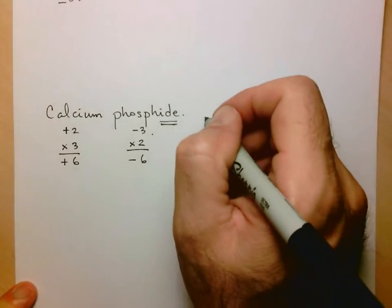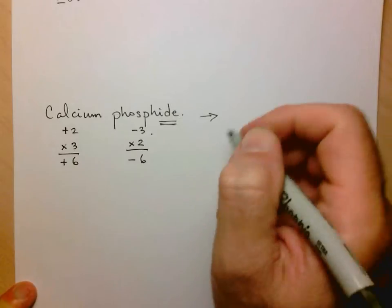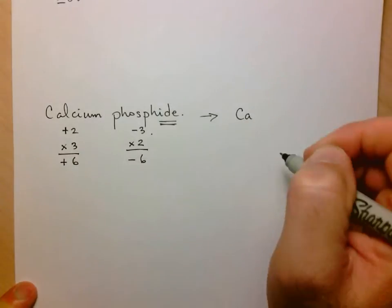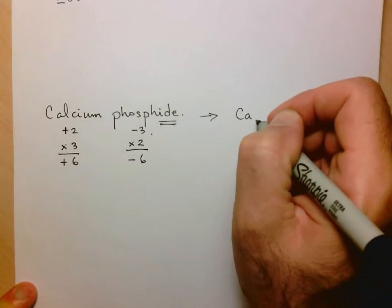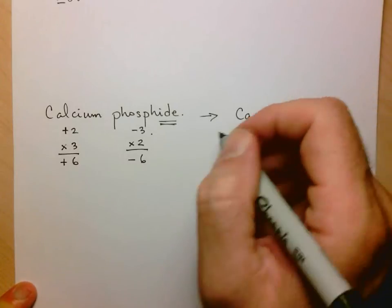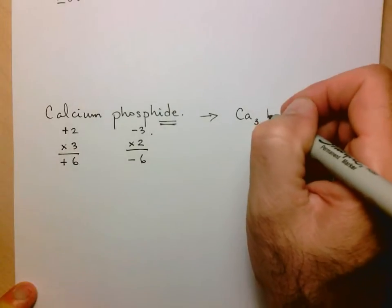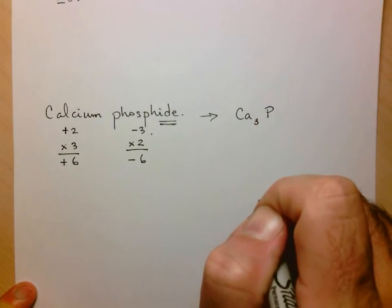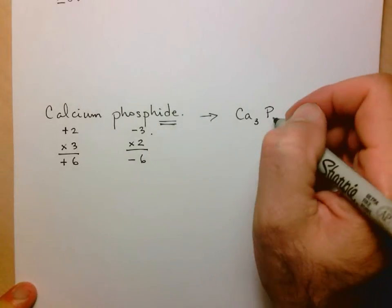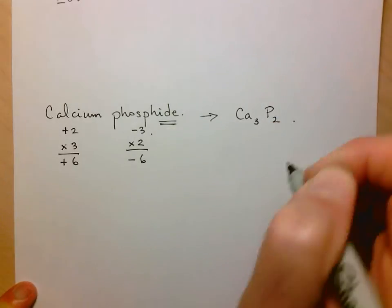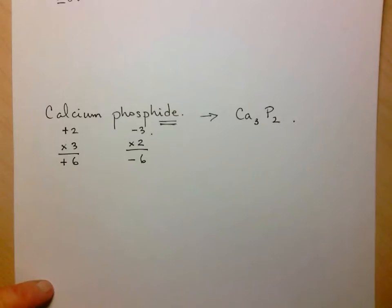From here I can now write the formula. I've got calcium. The number I need is indicated as a subscript at the bottom, not at the top. So three of those, and I need two phosphides, represented by P for phosphorus, because it's a phosphorus ion. And I need two of those, again as a subscript.